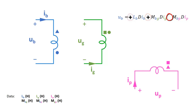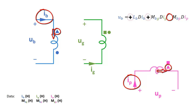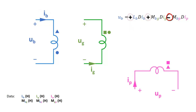For the third term we have to look at the blue current and the pink current. As you can see, the blue current enters the triangle, whereas the pink current leaves the coil by the triangle. So these currents are not entering through corresponding terminals. In this case this mutual induction will have the opposite sign compared to the self-induction that was positive, so this third term must be negative.